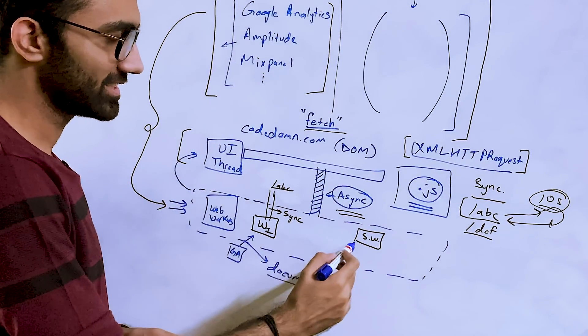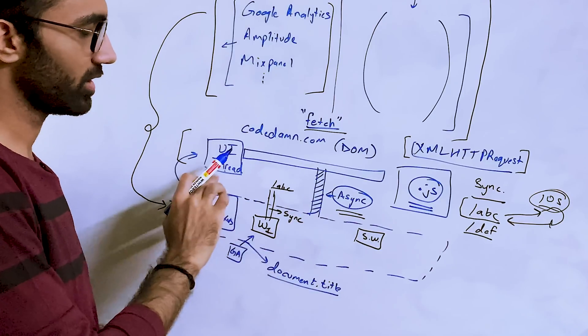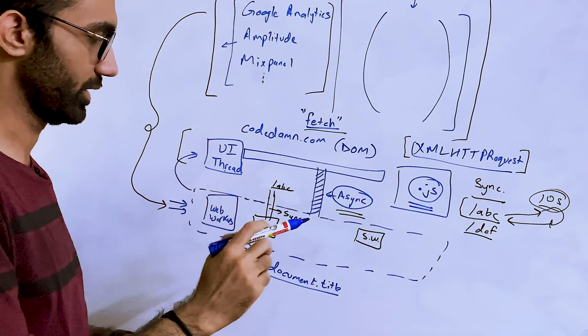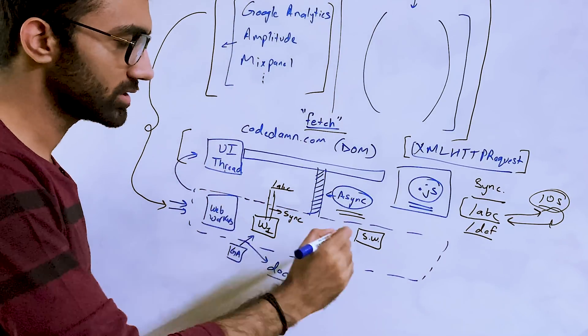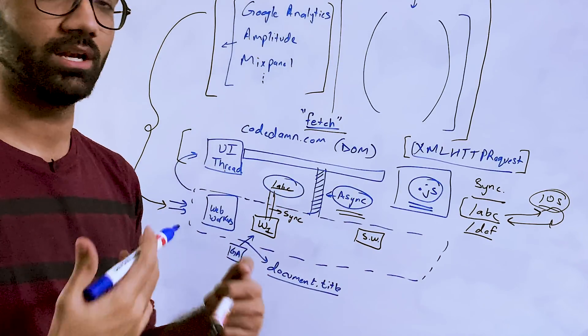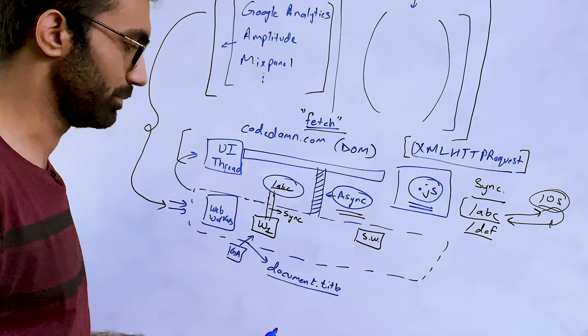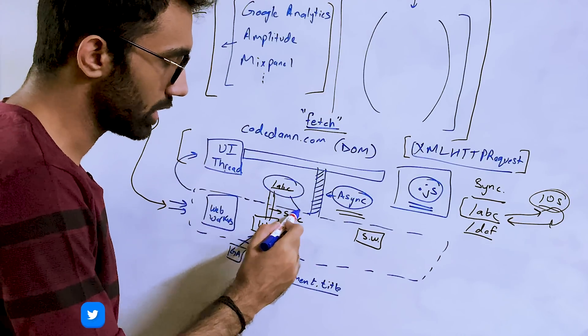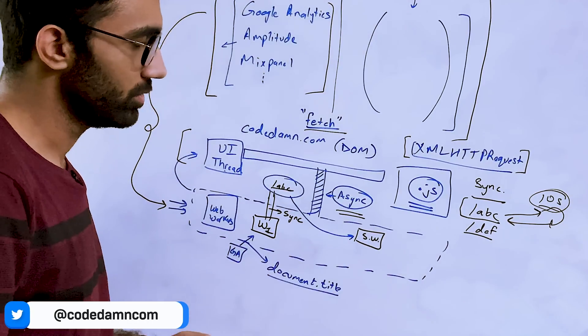But what service worker can do is it can intercept this request, because service workers have that ability to intercept the request made. So it intercepts this request over here.